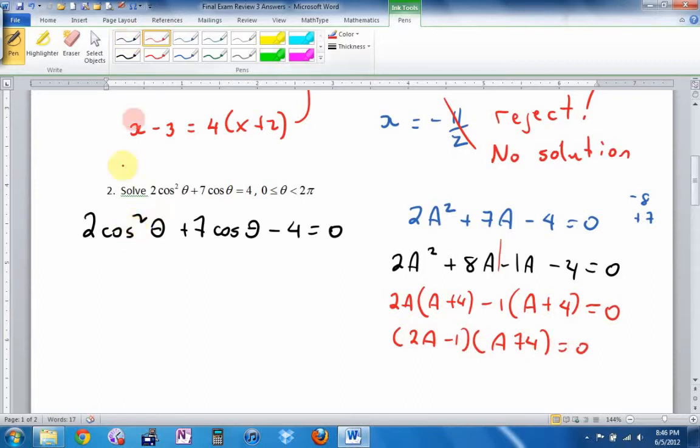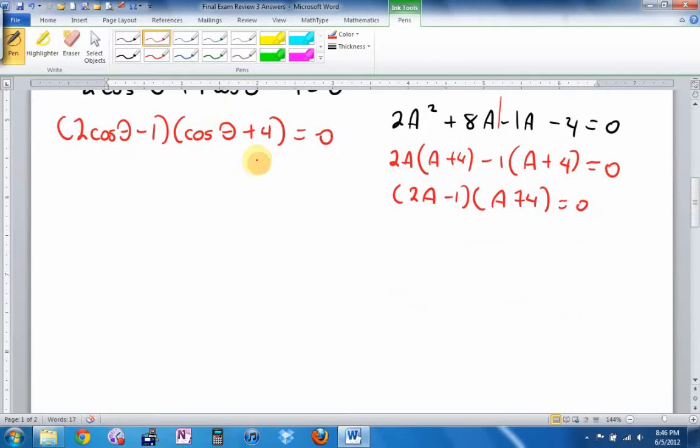That means this is going to factor into (2cosθ - 1)(cosθ + 4) = 0. What are the roots? Well, cosine of theta could be -4. Hey wait a minute. The smallest cosine gets is -1. The biggest it gets is +1. Cosine has a range between -1 and +1, which means this one here is going to have no solution. If it was tangent, the ugly cousin, well then yeah.